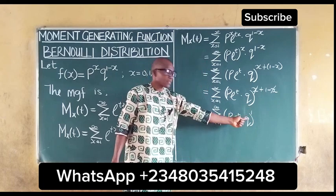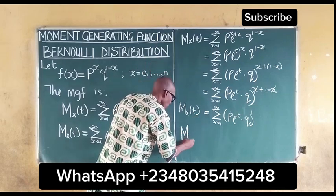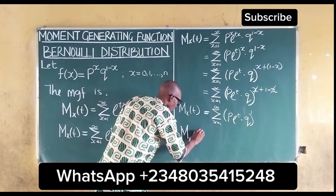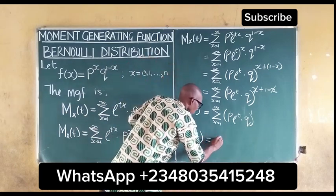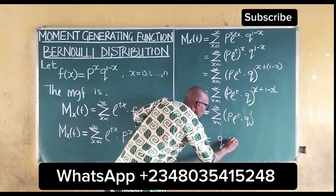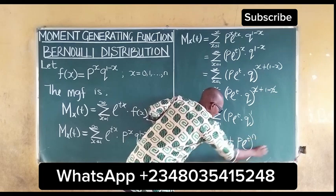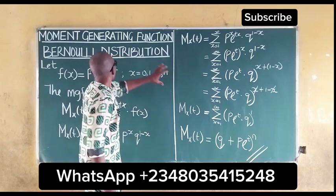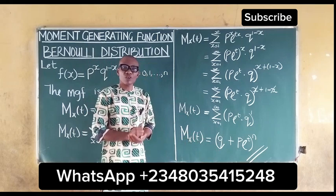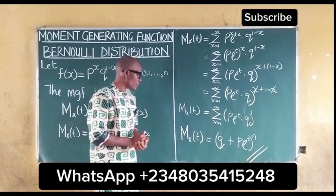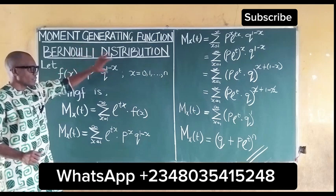Summing a constant over n terms gives n times that constant, so the moment generating function for the Bernoulli distribution can be written as (q plus pe^t) raised to the power of n. This is the final moment generating function for the Bernoulli distribution.